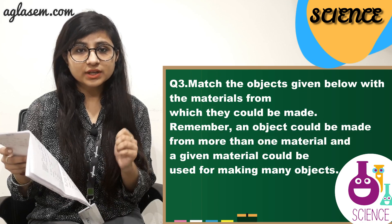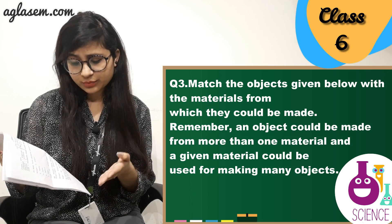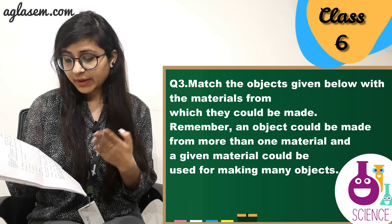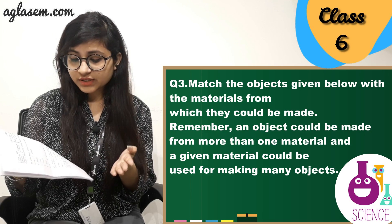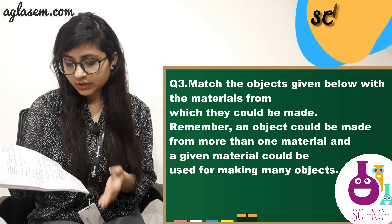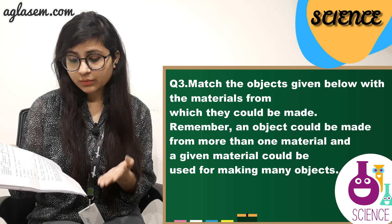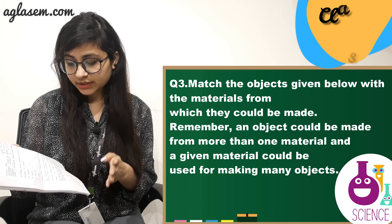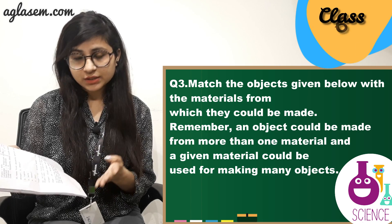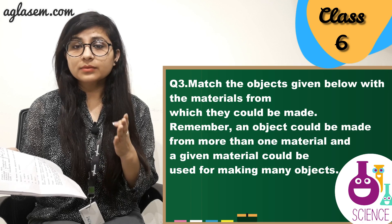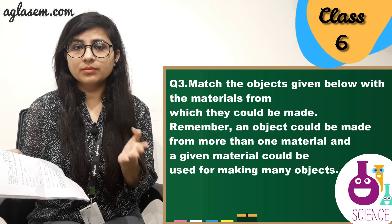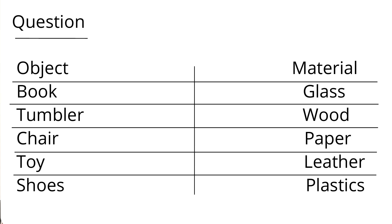Question number 3. Match the objects given below with the materials from which they could be made. Remember, an object could be made from more than one material, and a given material could be used for making many objects. Objects are: book, tumbler, chair, toy, shoes. The materials are: glass, wood, paper, leather, and plastics.